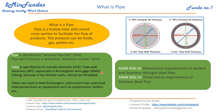Tubing always has very thin walls, so it cannot be threaded — this is a major difference between pipe and tube. Tubes are used in exchangers, instrument air lines, instrument lines, and small interconnecting piping on equipment such as compressors or boilers.